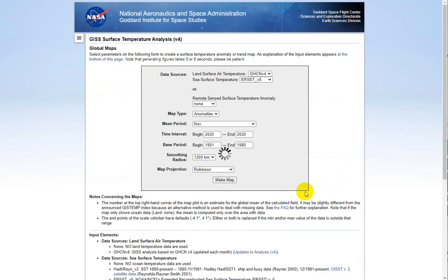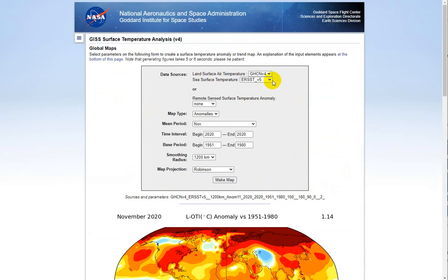So we're going to go through a couple of examples here. The data sources are updated constantly as the data improves. You can use the defaults that are here. We're not going to use remote-sensed surface temperature anomaly data, so you can just leave that blank. We do want to calculate anomalies. What does that mean? It means that we're going to use two periods of time, and we're going to calculate the change in surface temperature between those two periods of time.